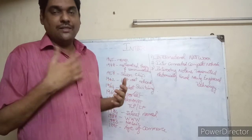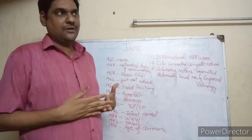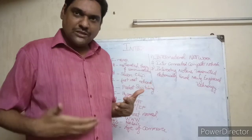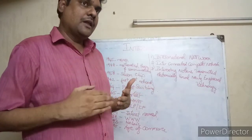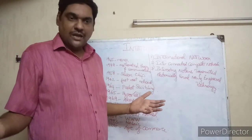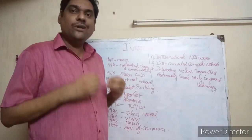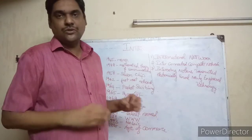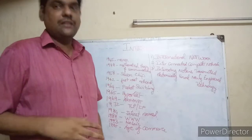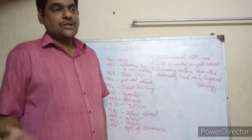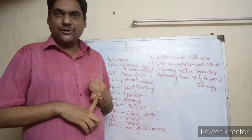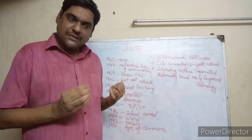The explosion in internet growth — this is a new technology that is growing beyond leaps and bounds. The internet is growing through generations. In the 1st generation, data transfer was very slow, measured in Kbps — kilobits per second. In the 2nd generation, data transfer improved to 64 kilobits per second.